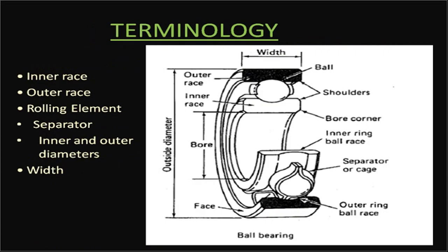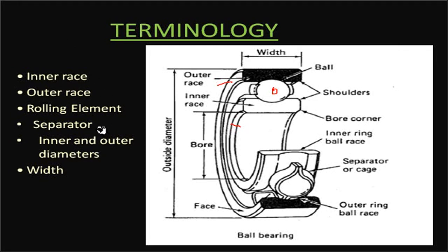Now let's look at the construction of a rolling contact bearing. The important components are the inner race and the outer race — these are two major components. The third major component is the rolling element: if it is a ball, it is called a ball bearing; if it is a roller, it is called a roller bearing. Another component is the separator, also called a cage, which keeps the balls or rollers equally spaced.